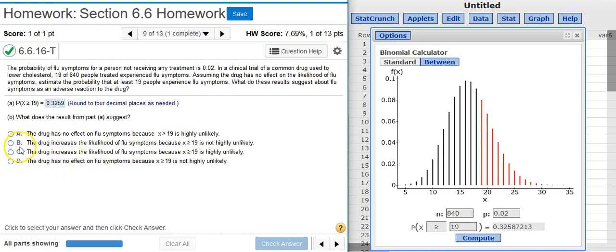Answer option B says, The drug increases the likelihood of flu symptoms because X greater than or equal to 19 is not highly unlikely. Well, the drug's not increasing the likelihood of flu symptoms because we're assuming that it doesn't do that. So we're not going to choose answer option B. Answer option C starts out the same way. The drug increases the likelihood of flu symptoms. So we're not going to choose that answer.